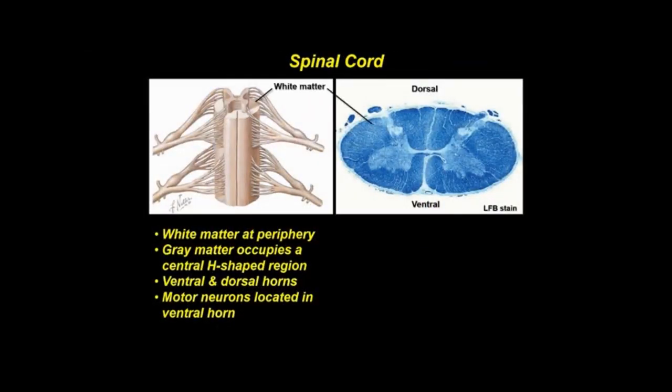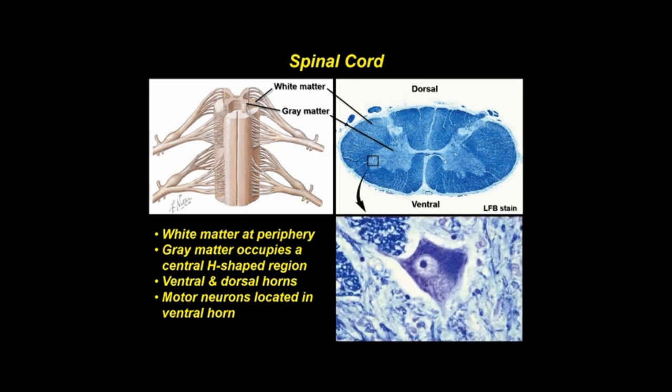White matter of the spinal cord, unlike that in other CNS areas, is peripherally located. Grey matter occupies an H-shaped central region and has two dorsal and two ventral horns. White matter consists of ascending and descending tracts of myelinated fibers, while grey matter consists chiefly of cell bodies and unmyelinated nerve fibers. Motor neurons are large cells located in the ventral horns of the grey matter.